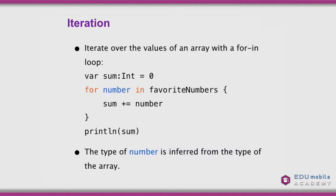We can iterate through the values of an array using the for-in loop. Here we have var sum: Int = 0, then for number in favoriteNumbers — we add up the sum of all favorite numbers and print it out. The type of number in the loop is inferred from the element type of the array, so since favoriteNumbers is [Int], number is an Int.